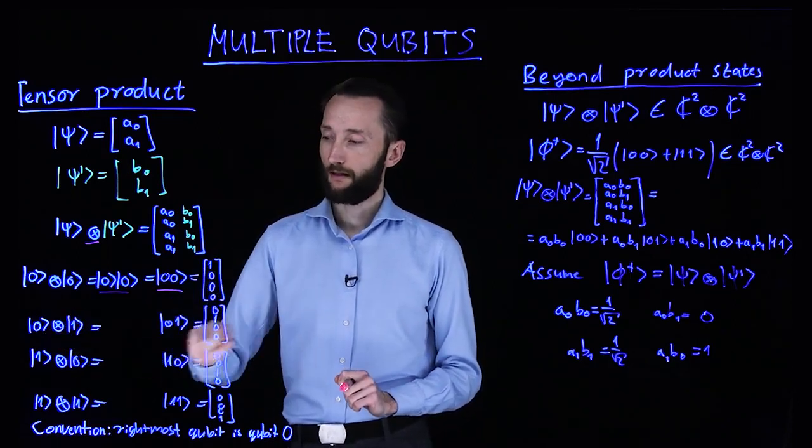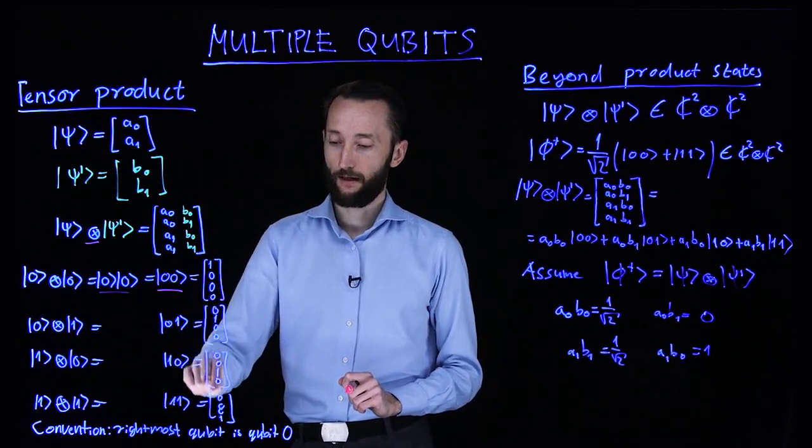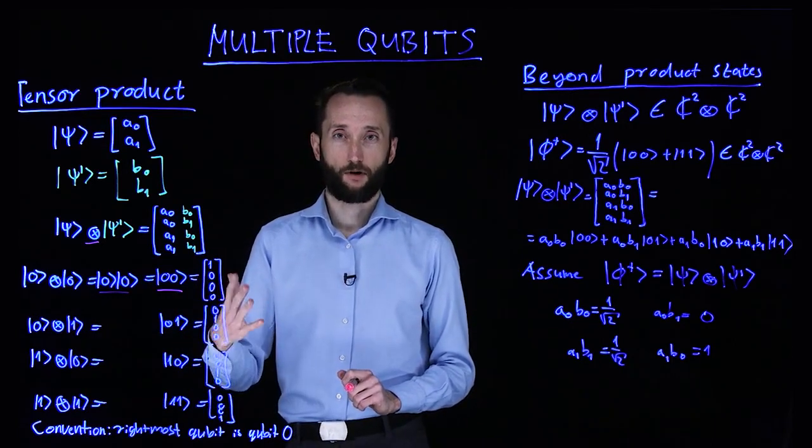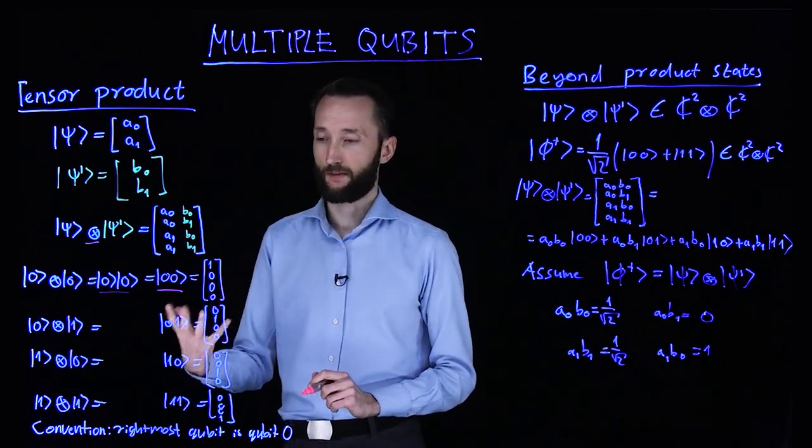You can do the same thing with 0 and 1, 1, 0, and 1, 1, and you will notice that these are the four possibilities, the four canonical basis vectors in the four-dimensional complex space.